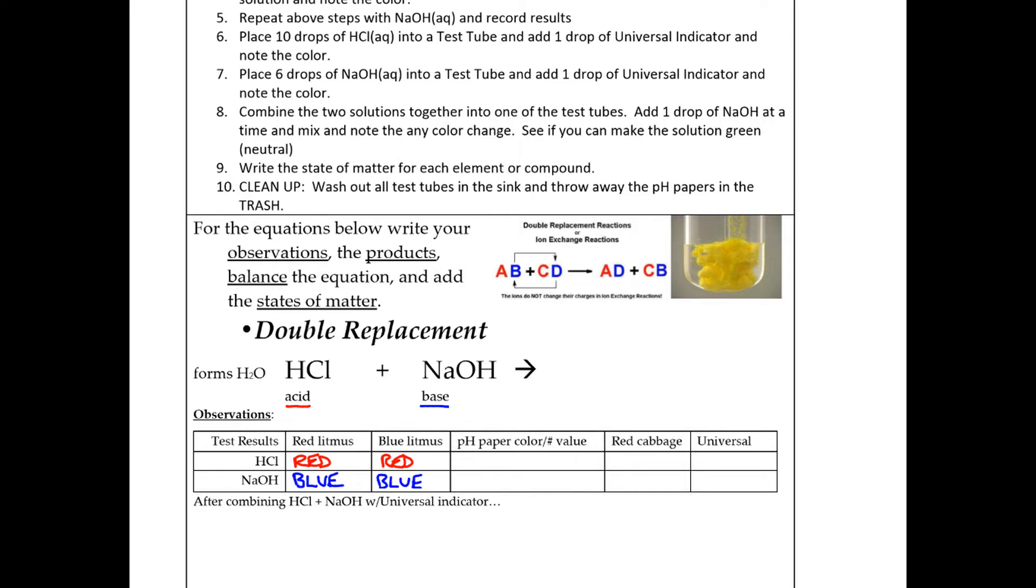The red litmus paper, sorry, the HCl would have had a low pH. But write down the actual number. And the base would have had a high pH. And just make sure you write that actual number. Don't just write low and high pH.